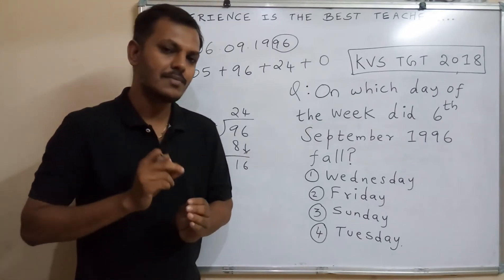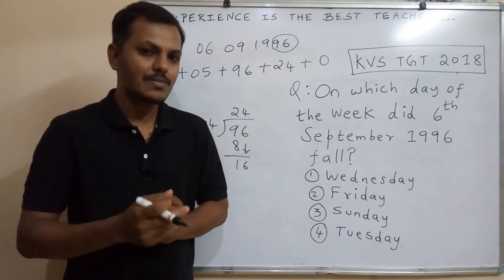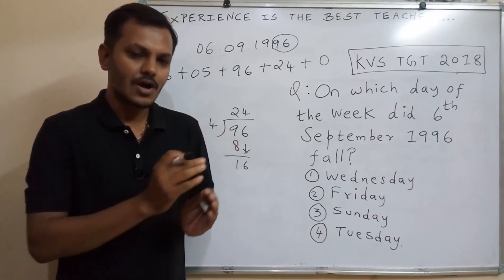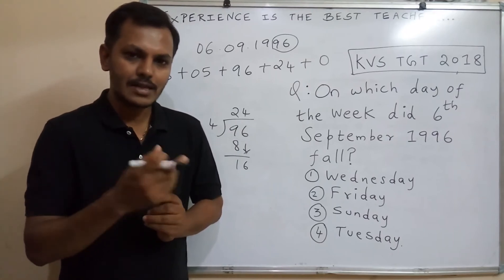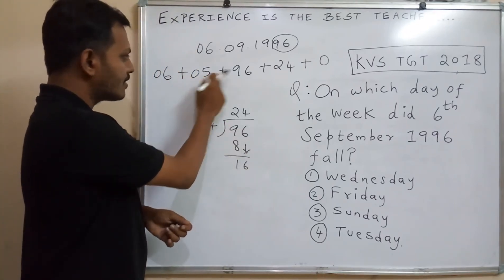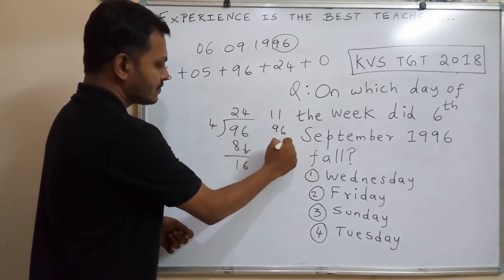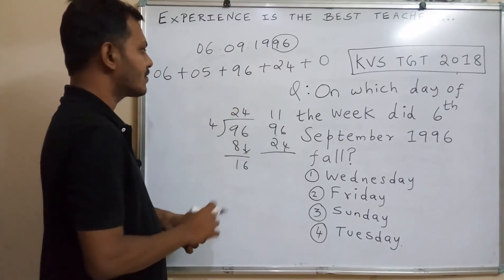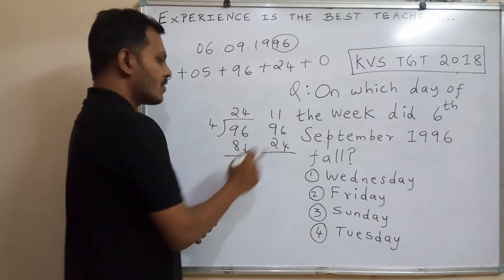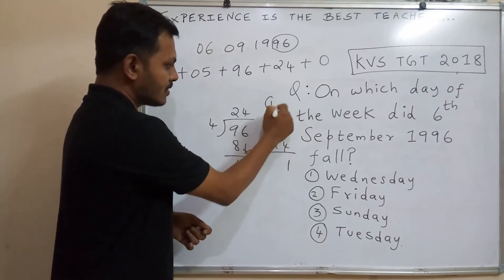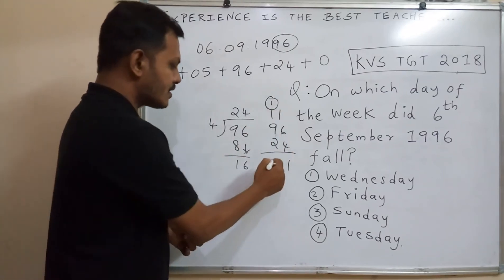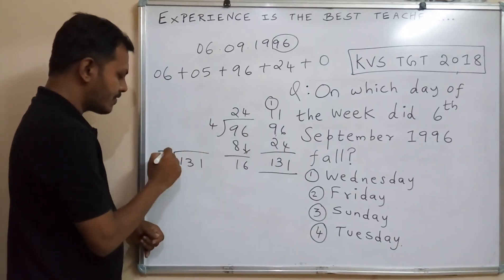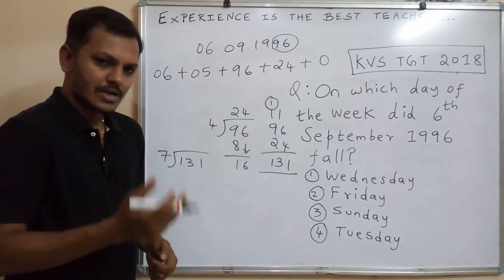After adding all five numbers, you divide by 7 — because there are 7 days in a week — and find the remainder. The remainder must be between 0 and 6. Adding: 06 + 05 + 96 + 24 + 0 = 131. Now divide 131 by 7. Seven goes into 131 eighteen times (7 × 18 = 126), giving a remainder of 5.